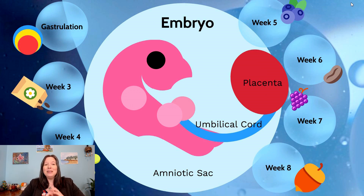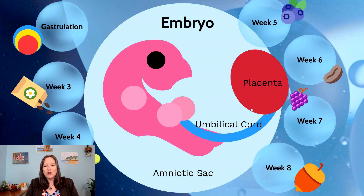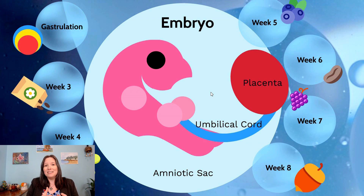In the stage of the embryo, we see a lot of specialization happening and support structures coming online. For instance, there is the placenta — the organ that attaches to the uterine wall. The placenta is essential; it's where nutrients come from. It absorbs nutrients and brings them to the offspring via the umbilical cord, and it also takes away waste products.